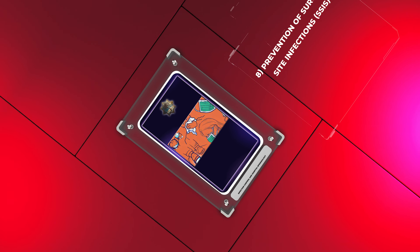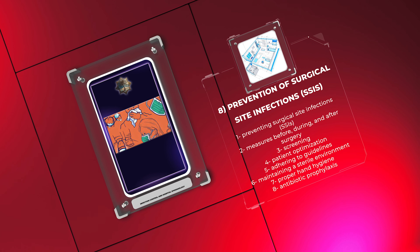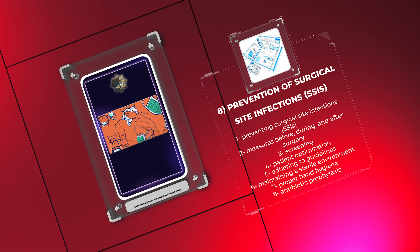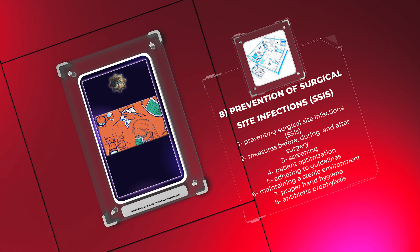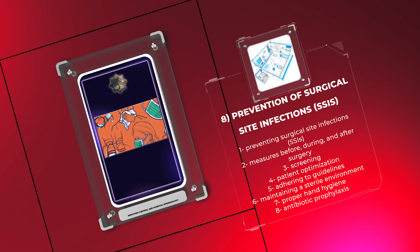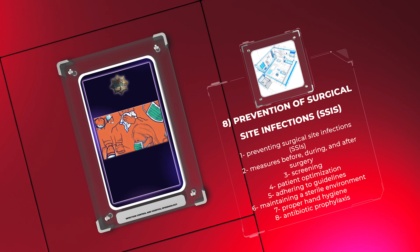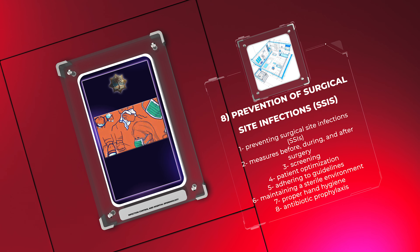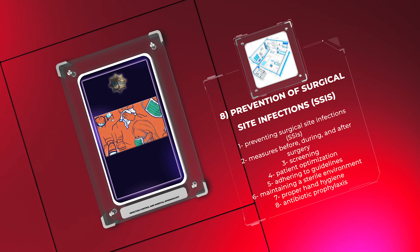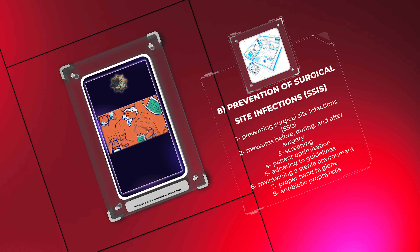Preventing surgical site infections involves various measures before, during, and after surgery. These include screening, patient optimization, adhering to guidelines, maintaining a sterile environment, proper hand hygiene, antibiotic prophylaxis, aseptic wound management, surveillance, and collaboration among healthcare professionals.